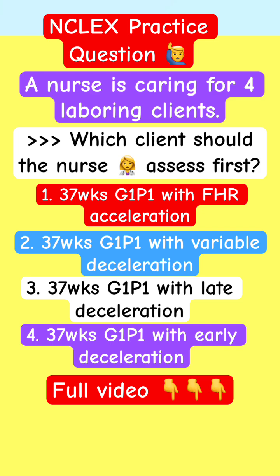Patient one: 37 weeks, G1P1, with fetal heart rate acceleration. Patient two: same gestational age, same GPE, with variable deceleration.